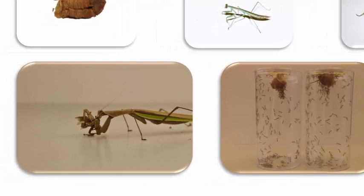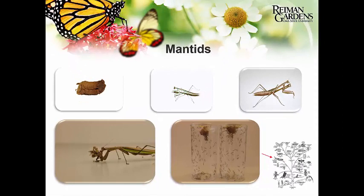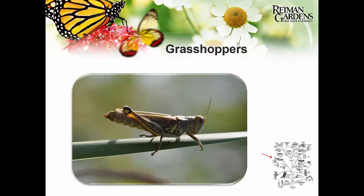Praying mantises are fun to watch eat — the one pictured is eating a grasshopper. You can buy praying mantis oothecas in garden catalogs, but when you put them out, many will eat each other without enough food. Emerge them in a container first and quickly spread them all over your yard. They are generalists though — they'll eat everything, including beneficial insects like butterfly caterpillars you might want to keep.